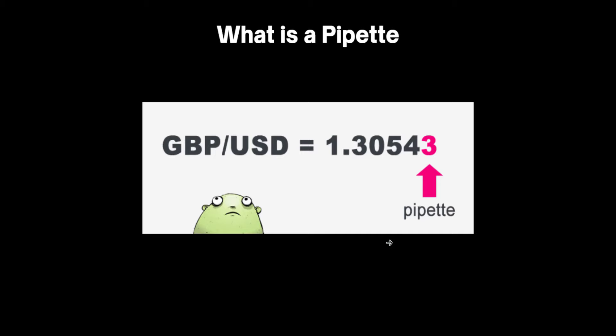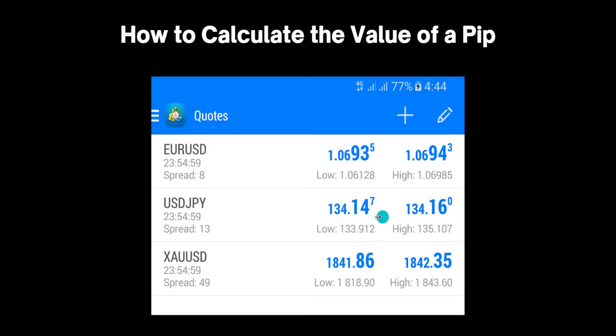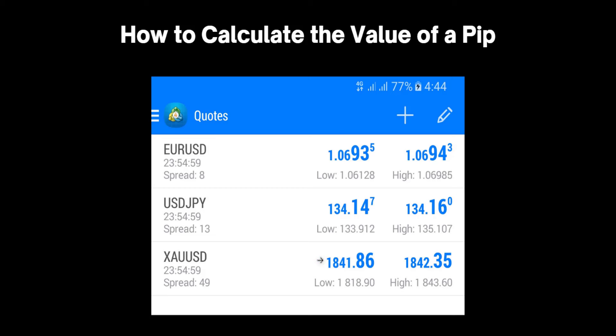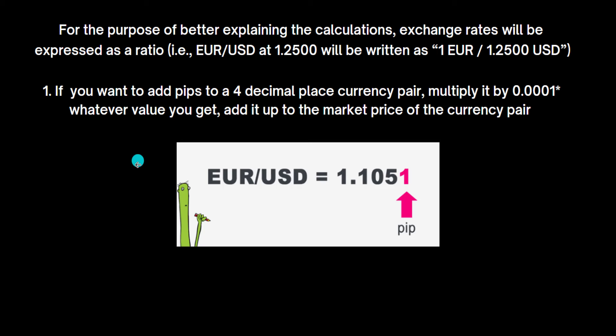So we have an increment of two pips — 4 plus 2 gives you 6. For gold, we can see it has two decimal places and we consider the last one as our pip. This is how you can literally see your pip. For the purpose of better explaining the calculations, the exchange rate will be expressed as a ratio — meaning one euro is equivalent to a given value, for example 1.1051, and the last digit is the pip.